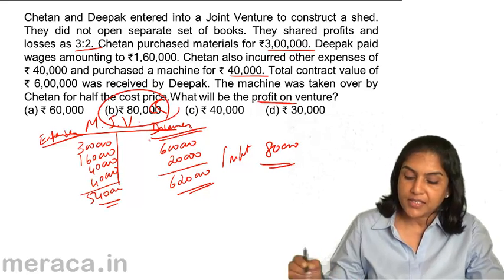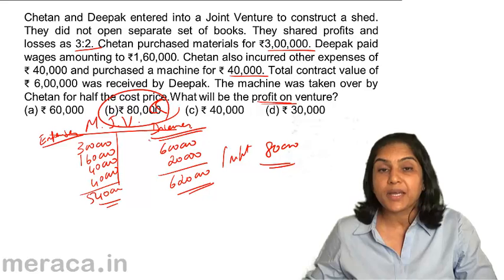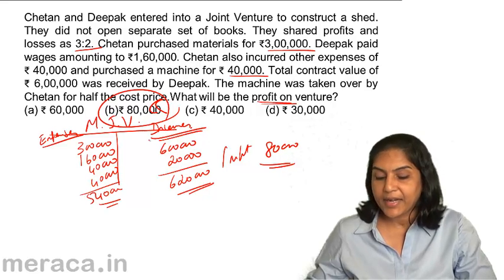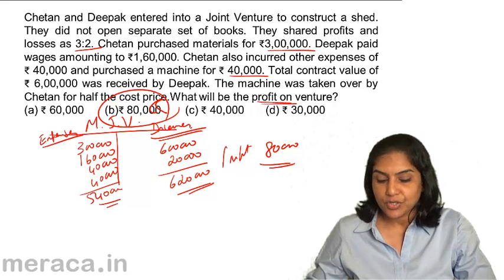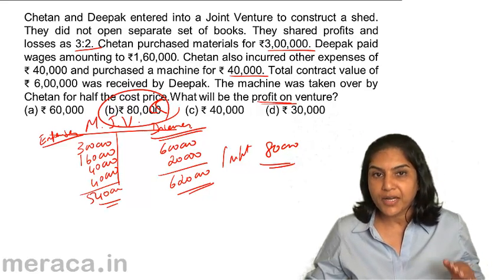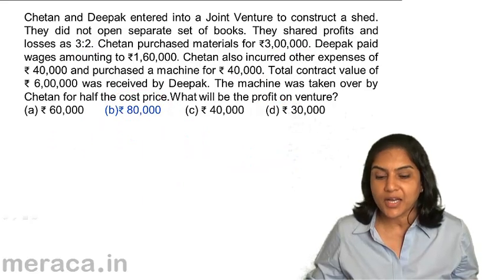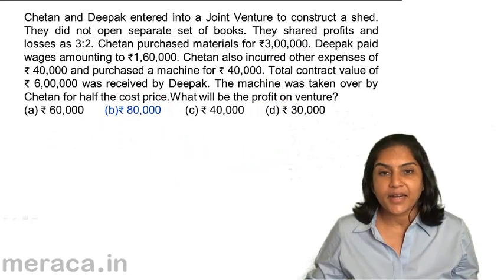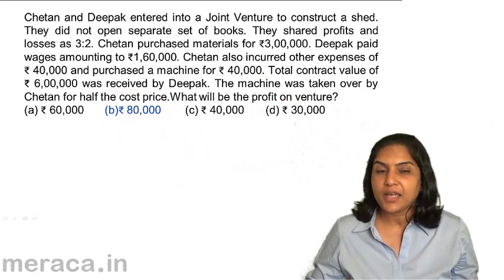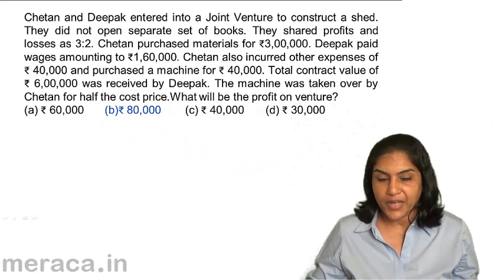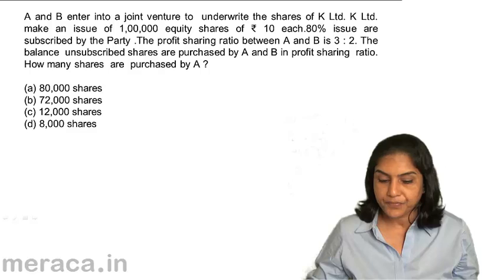The correct answer should be B — ₹80,000. All we have done is put expenses on one side, incomes on the other side, and arrived at the profit of ₹80,000.